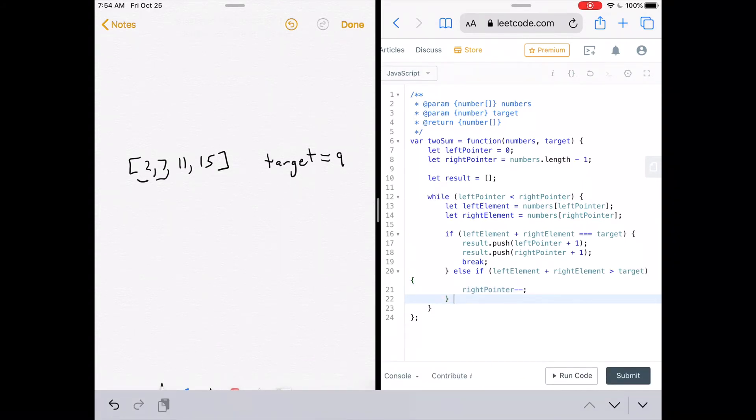One thing to note is that we need one more else statement. Remember, we said earlier that if the two elements are less than the target, we would need to increase the left pointer. That's not the case in our example, but we still need it, of course, for cases where that does happen. So else we would do left pointer plus plus.